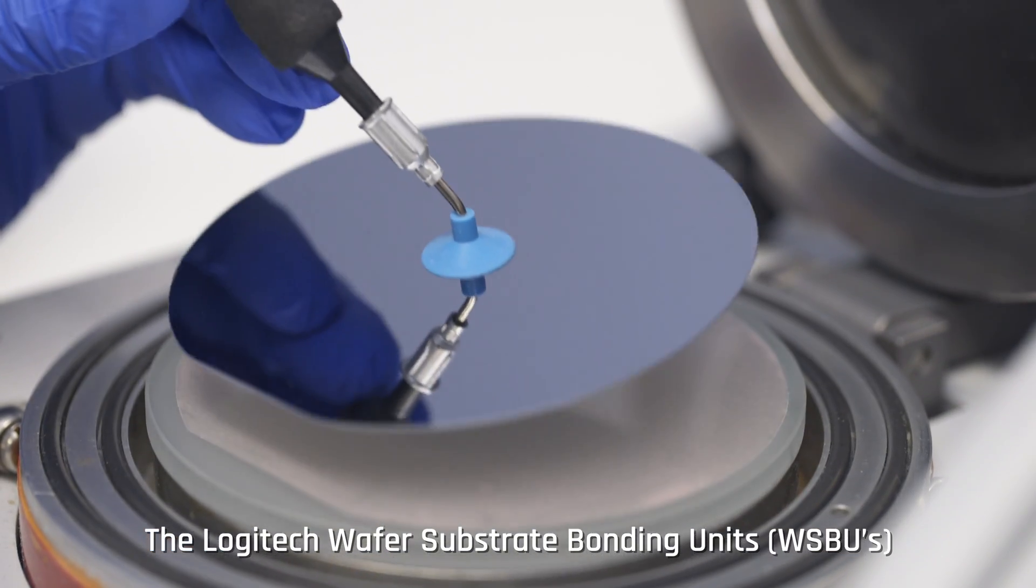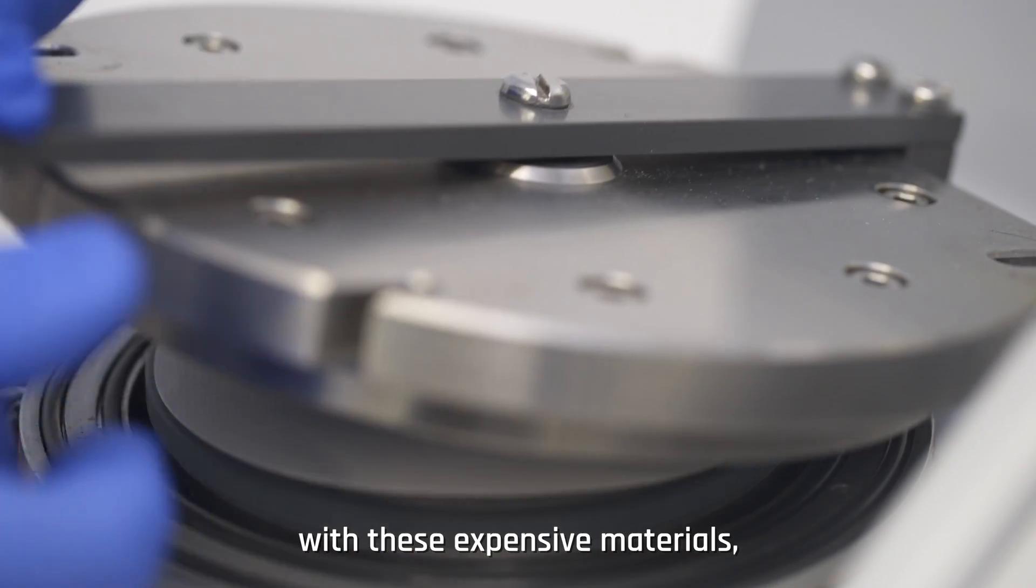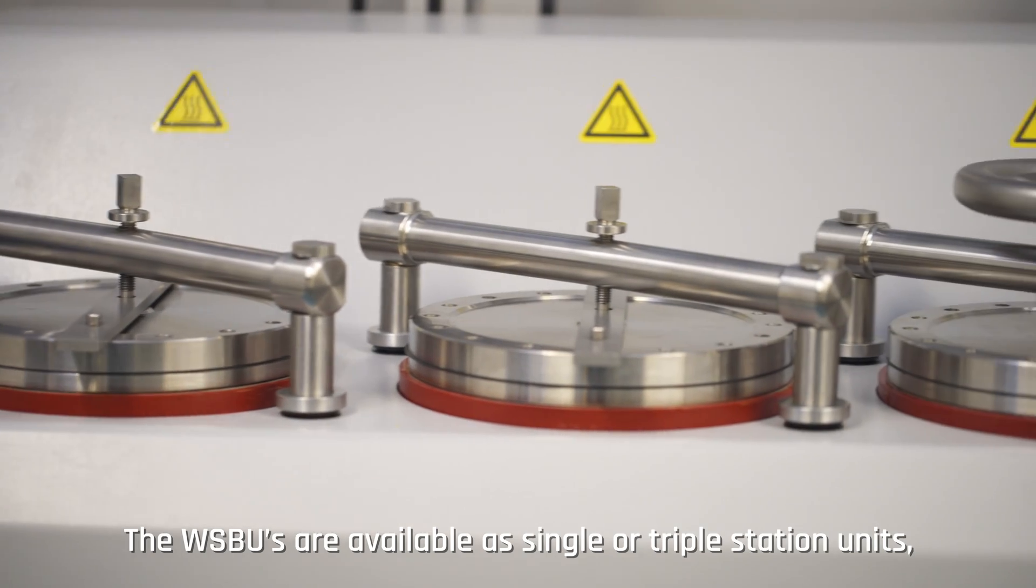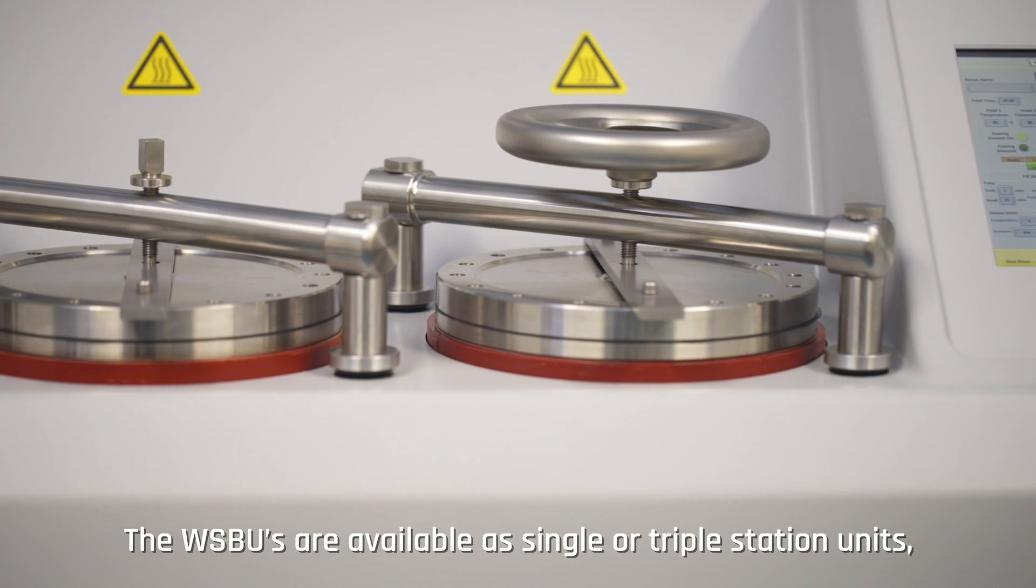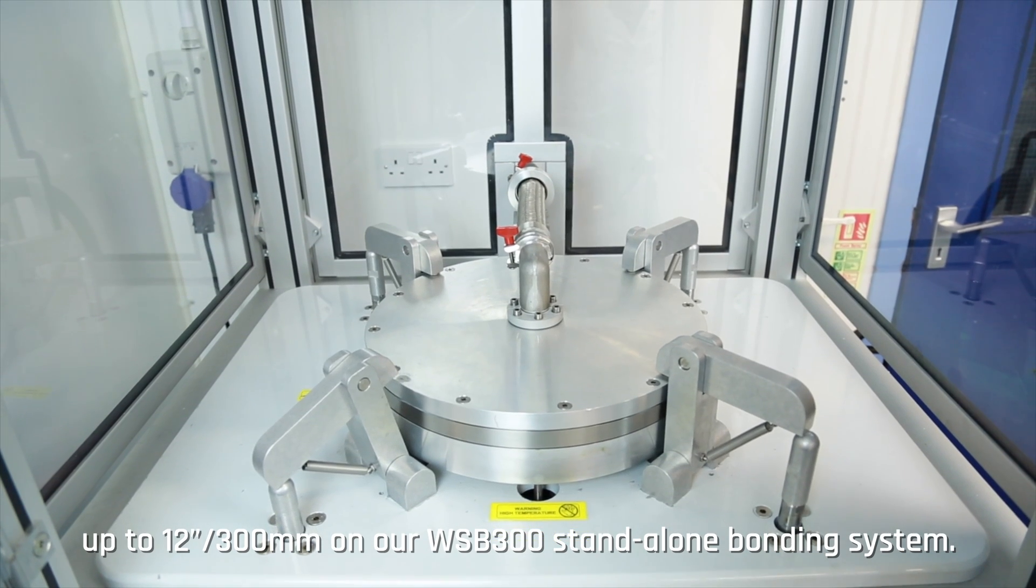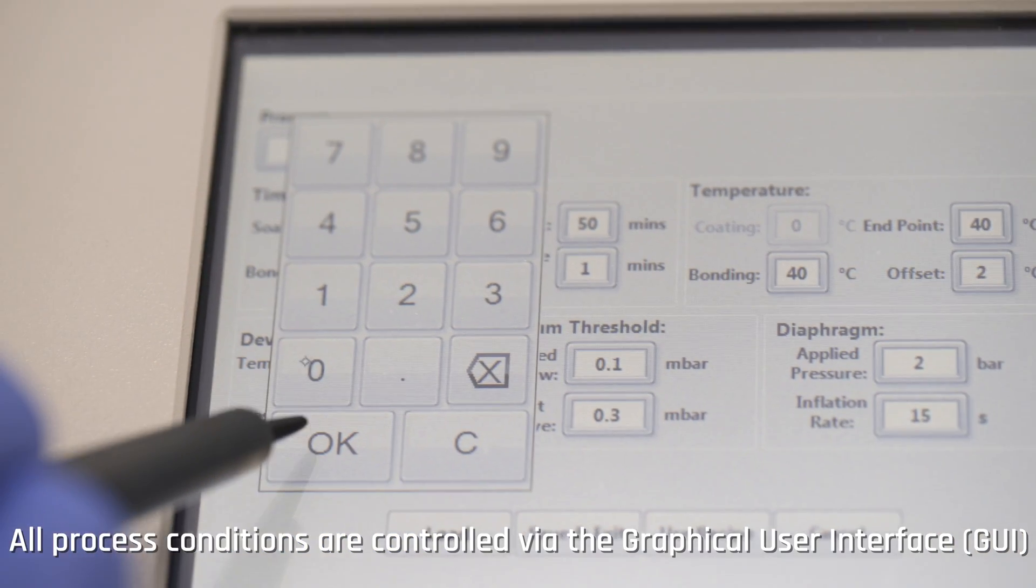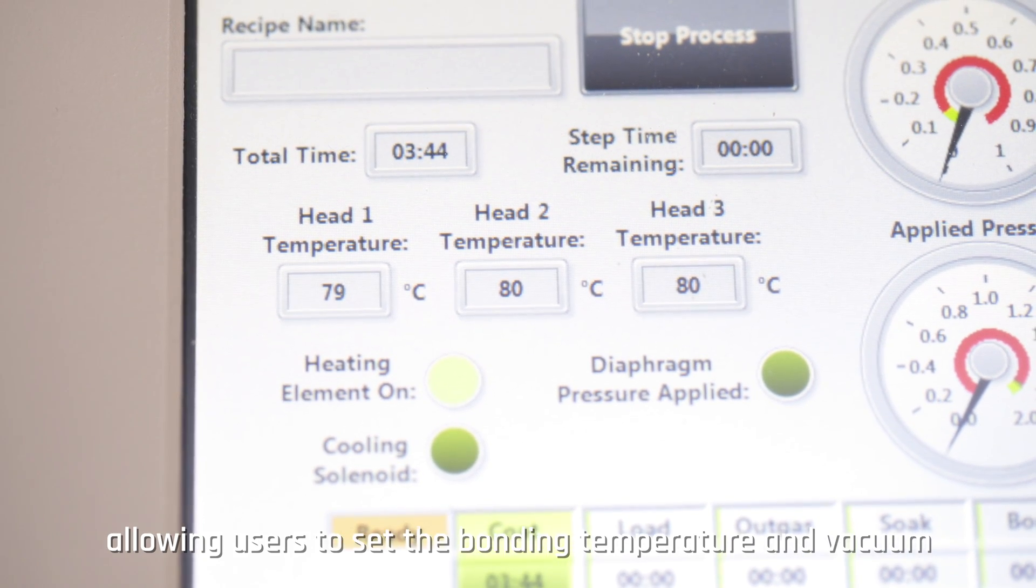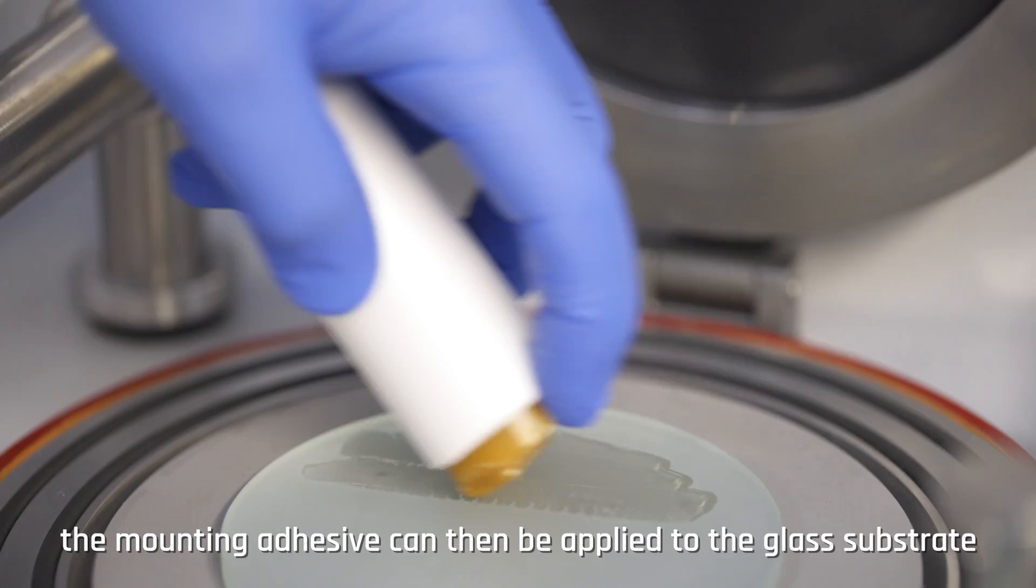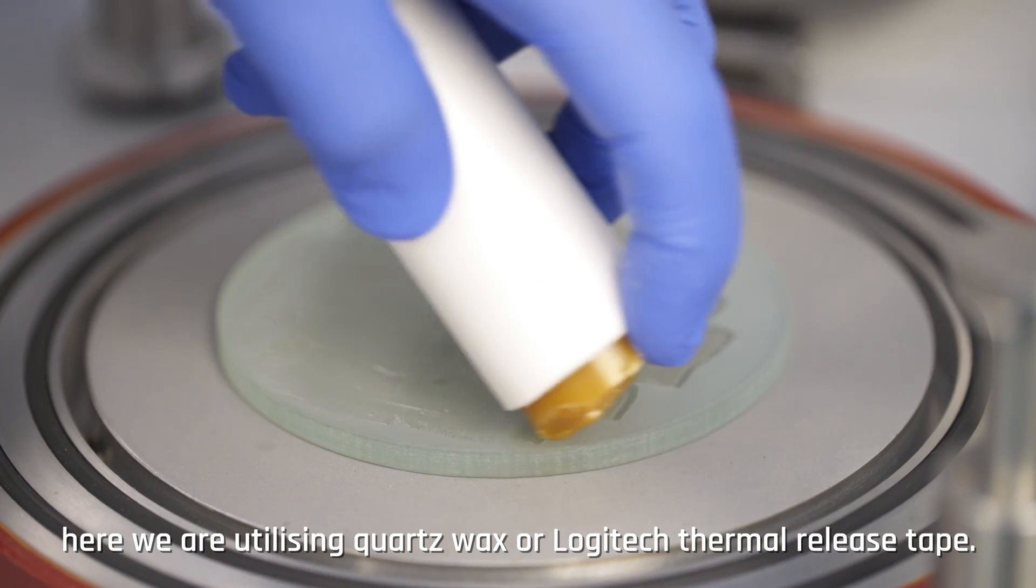The Logitech wafer substrate bonding units have been designed specifically for the bonding of fragile semiconductor wafers. These units are designed to minimize breakage with these expensive materials whilst retaining the highest quality of sample yield. The WSB units are available as single or triple station units with a wafer process capacity of up to 4"/100mm. All process conditions are controlled by the graphical user interface, allowing users to set the bonding temperature and vacuum required for the specific sample. Once the bonding temperature has been set and reached, the mounting adhesive can then be applied to the glass substrate. Here we are utilizing quartz wax or Logitech thermal release tape.